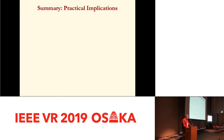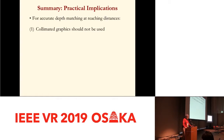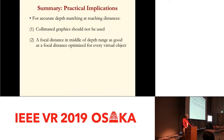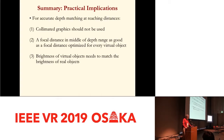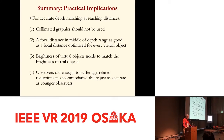The practical implications: for accurate depth matching at reaching distances, do not use collimated graphics. A focal distance set to the middle of the depth range is as good as a focal distance optimized for every object. Object brightness needs to match that of real objects. Observers old enough to suffer age-related reduction in accommodative ability are just as accurate as younger observers. This work was motivated by medical applications — most doctors and surgeons are, in fact, old enough to need reading glasses.